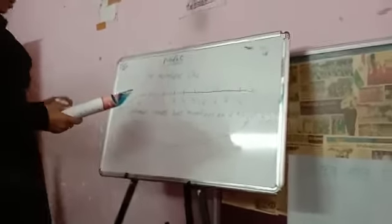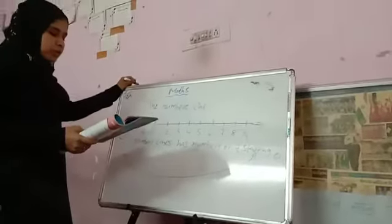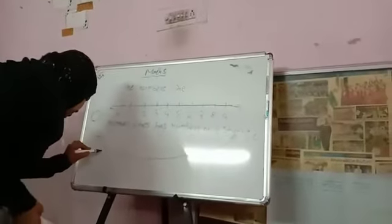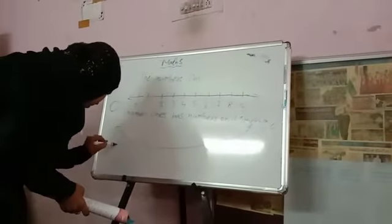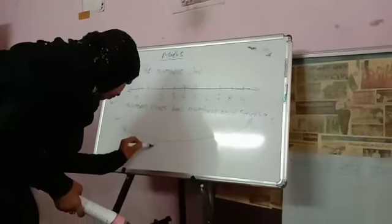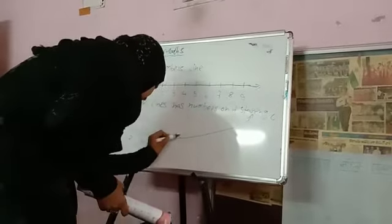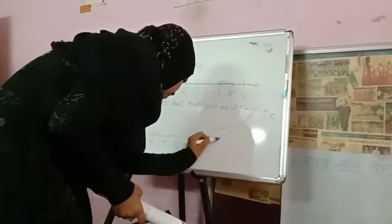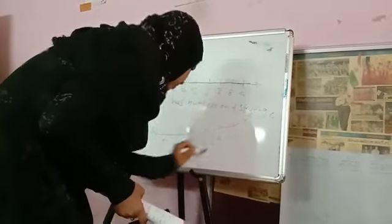After moving to the right on the number line, the numbers increase: one, two, three, four, five, six, seven, eight, nine, ten. Okay children.